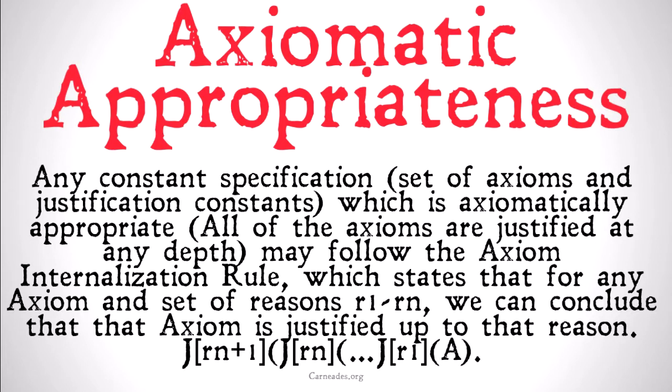Any set of reasons that justify an axiom — say we have two reasons — means the axiom is justified and that justification is itself justified. If we have a constant specification which is axiomatically appropriate, basically all axioms are justified at any depth, we can conclude that our doubly justified axiom is in fact triply justified — justified at a third level. Then in turn we can conclude it's justified at a fourth level, and so on. We can conclude the axiom is justified up to that reason and one beyond.